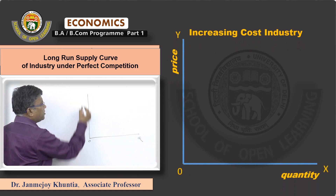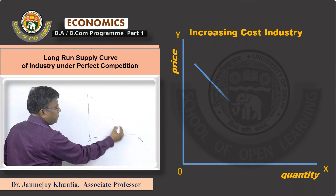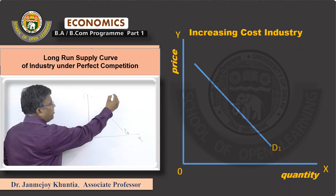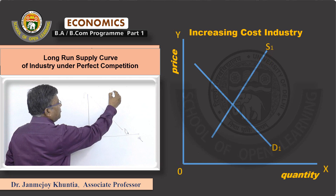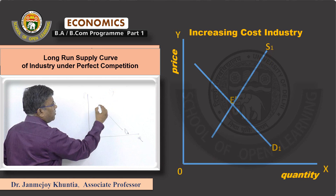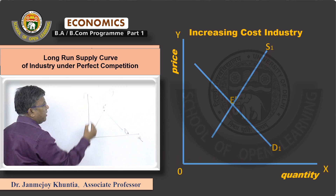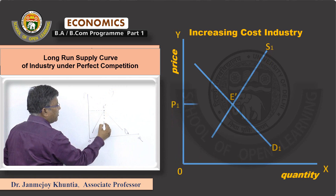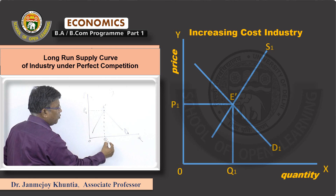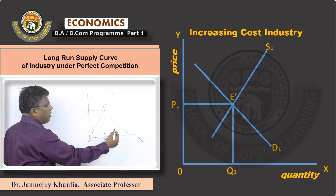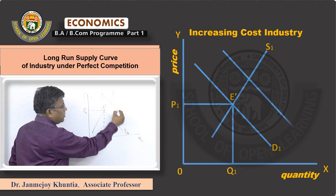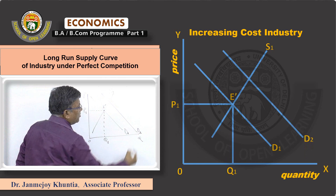On the diagram, quantity is along the horizontal axis and price along the vertical axis. The initial demand curve is D1, which is downward sloping. The initial supply curve is S1. The equilibrium point in the beginning is at E dash, with equilibrium price at P1 and quantity at Q1. Now, the demand curve shifts to the right due to increase in demand in the long run, so the demand curve shifts to D2.